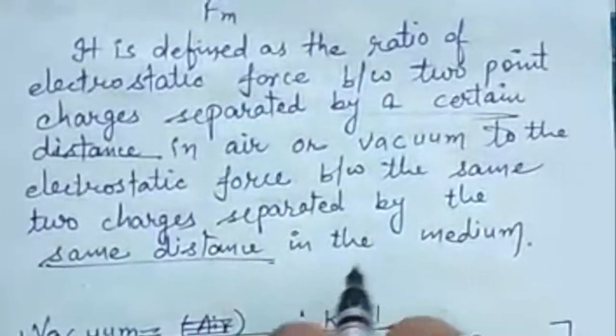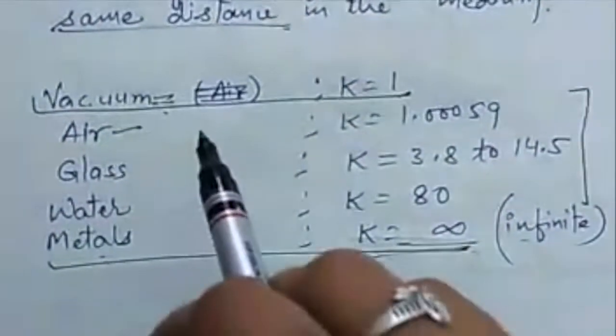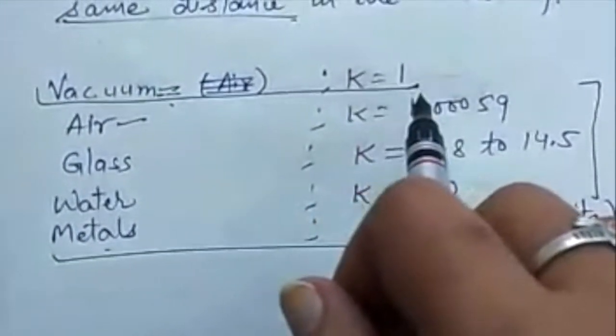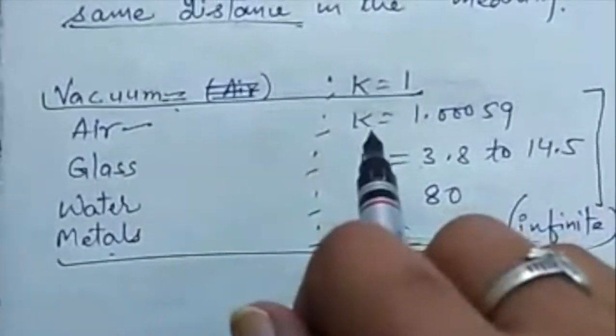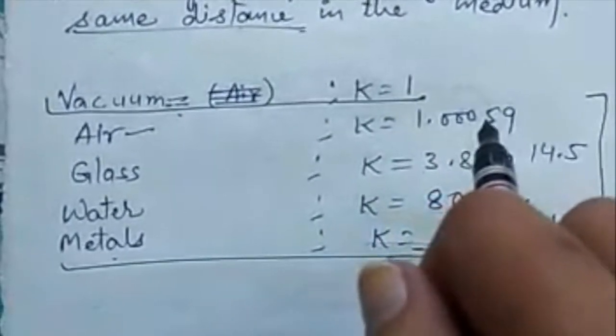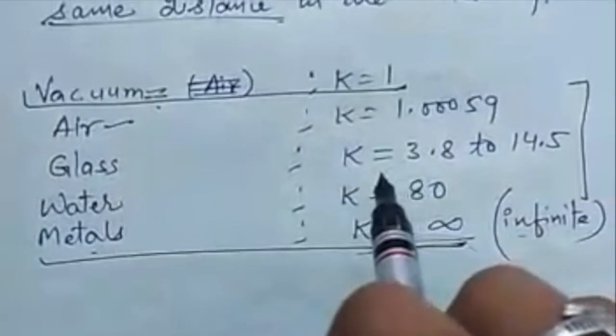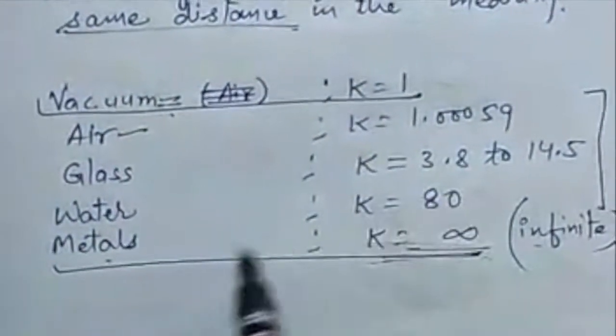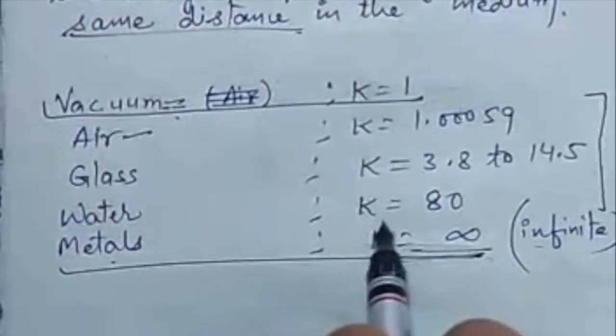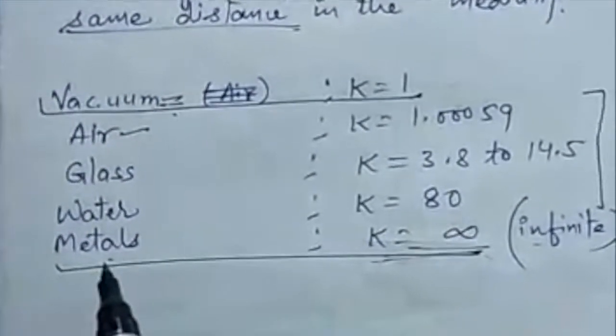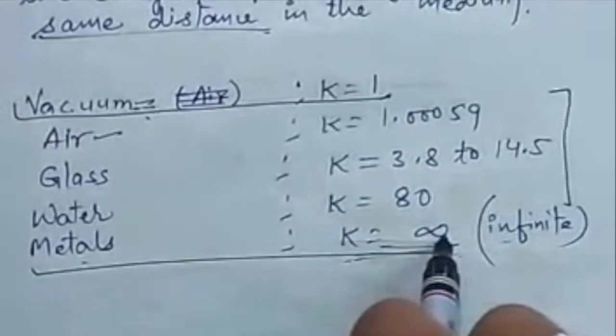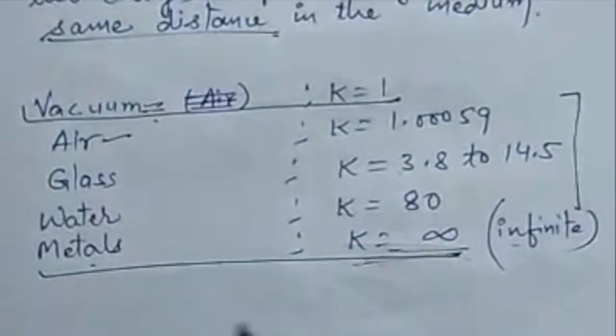For vacuum, the dielectric constant has value K equal to 1. For air, K is 1.00059. For glass, K lies between 3.8 and 14.5. For water, K is 80, and in case of metals it is infinite.